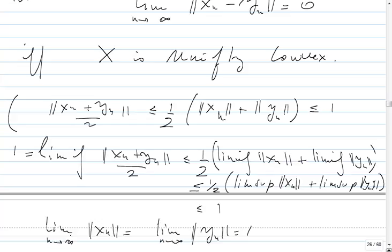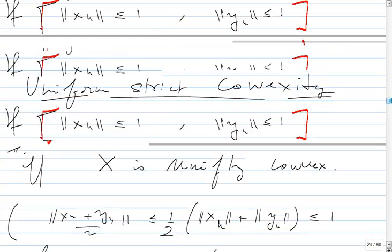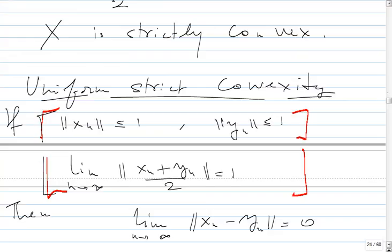Basically, the condition that the midpoint is in the unit ball and the midpoint norm goes to 1 forces the limits of the sequences Xn and Yn to also go to 1 in norm. This condition is very powerful. I call that uniform strict convexity — instead of having strict convexity for two vectors, you have it for sequences. This is very useful in applications when we want to prove that the minimizing sequence of some functional converges.